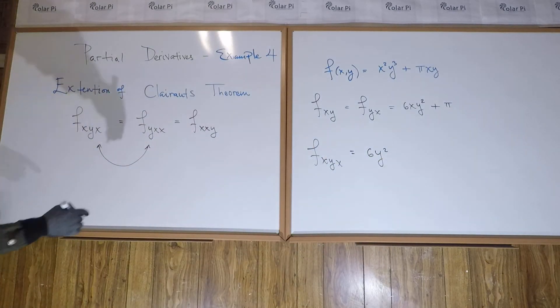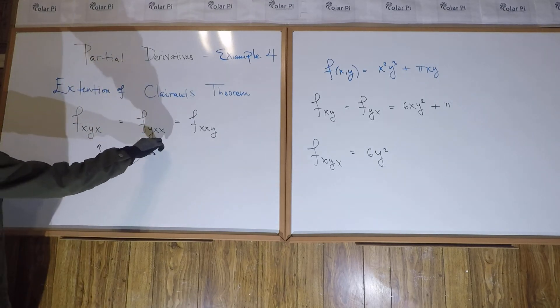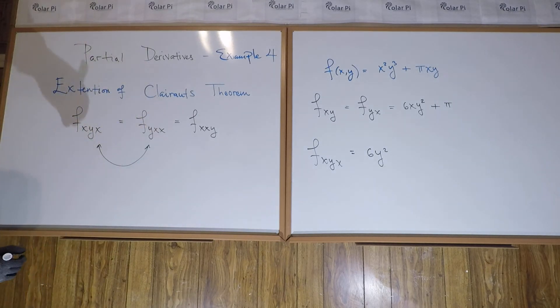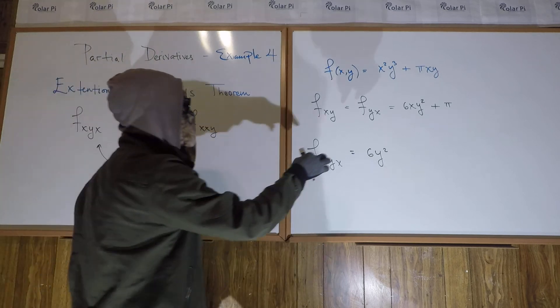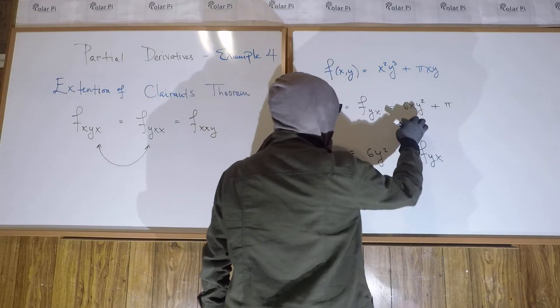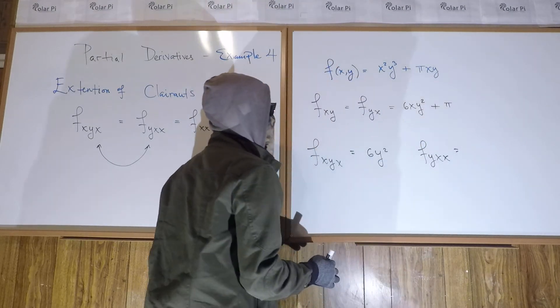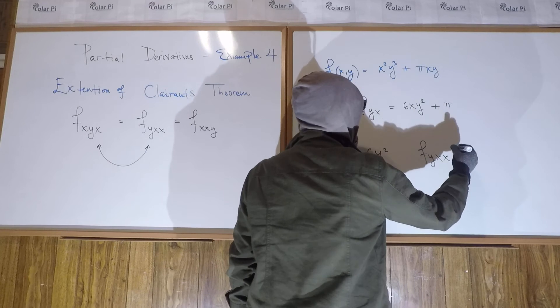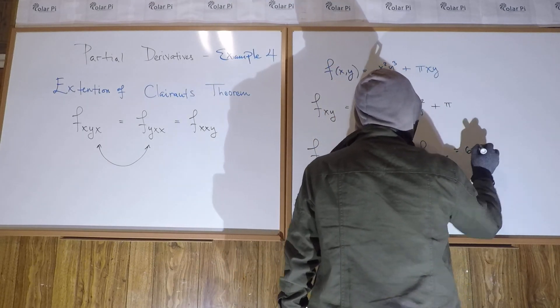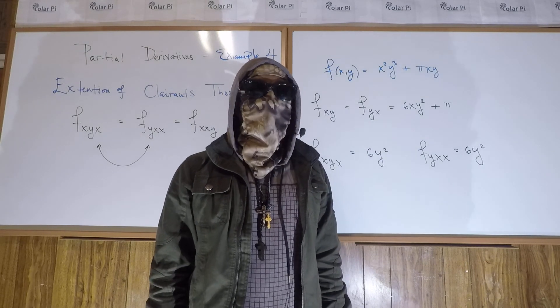And so, we need to show what I just did, Fxyx, is this guy, and we need to show that he is the same as this guy, right? And we already had Fyx is this, so Fyx is this. So, when I go Fyxx, I just need to do the partial with respect to x of this. Well, that's 6y squared. Ah! Clairot's extension works.